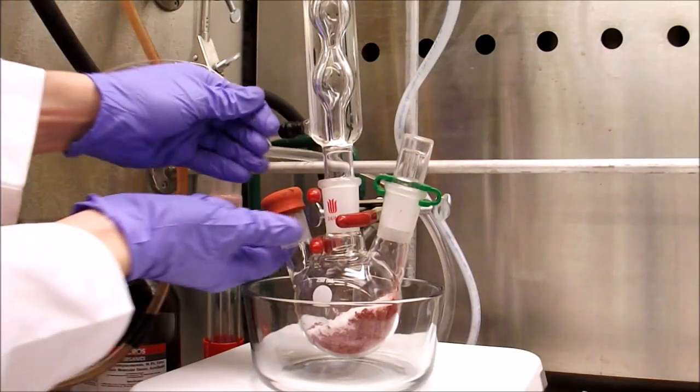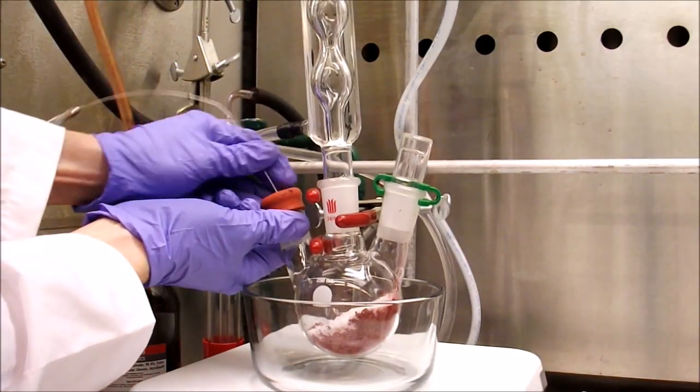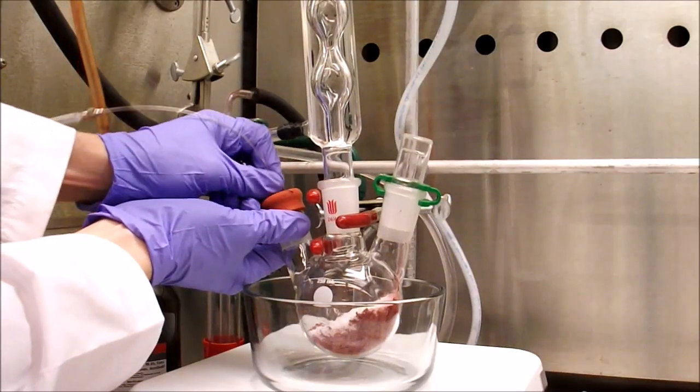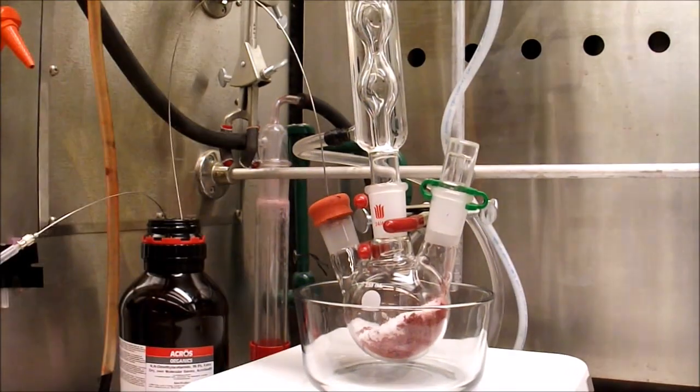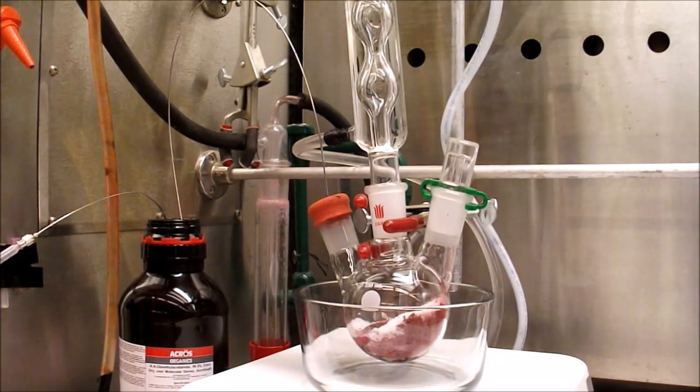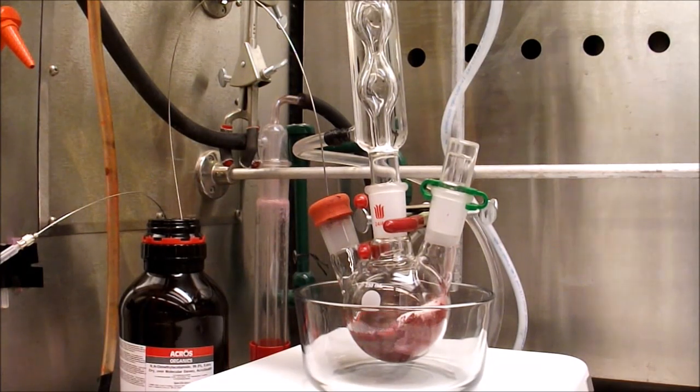Next the reaction is stoppered and purged with nitrogen for 10 minutes. It isn't in the shot, but there is a vent needle in the septa on the top of the reflux condenser. After the solids have been thoroughly purged, dried dimethylacetamide is added via cannula transfer to half fill the flask.